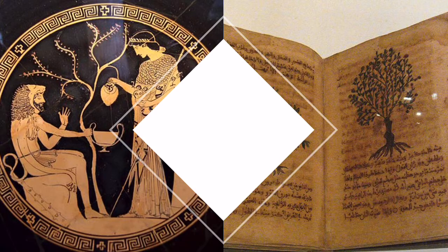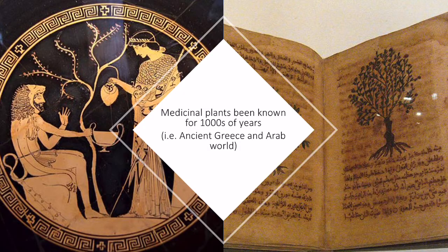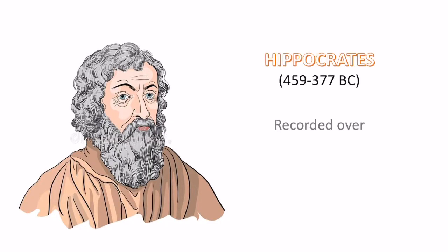Taking medicines from nature hasn't just appeared recently — it's actually been done for thousands of years. We can see on this piece of pottery that the Greeks took leaves from trees, put them in their tea and used it as medicine. The Arab world has also found similar medicines from living with nature. An example is Hippocrates, who found 300 medicinal plants during his lifetime, which is why he's known as the father of medicine.